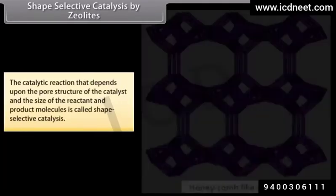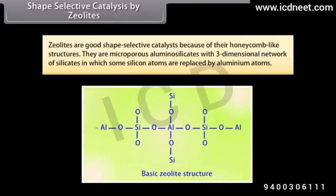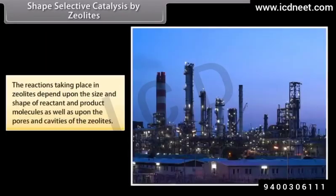Shape selective catalysis depends upon the pore structure of the catalyst and the size of the reactant and product molecules. Zeolites are good shape selective catalysts because of their honeycomb-like structures. They are microporous aluminosilicates with a three-dimensional network of silicates in which some silicon atoms are replaced by aluminium atoms. The reactions taking place in zeolites depend upon the size and shape of reactant and product molecules as well as upon the pores and cavities of the zeolites. Zeolites are used as catalysts in petrochemical industries for cracking of hydrocarbons and isomerization.